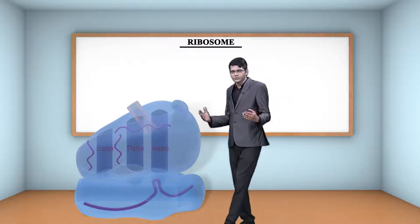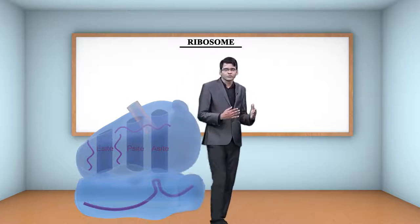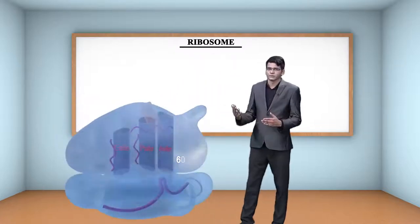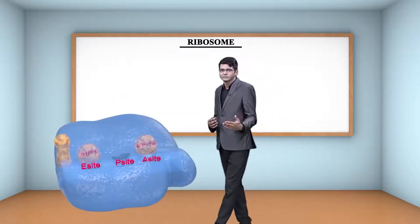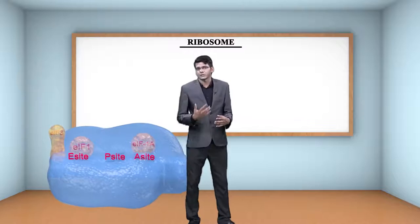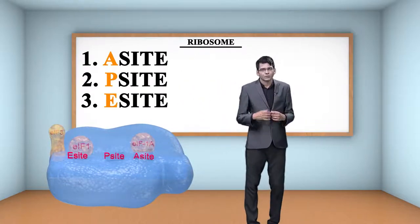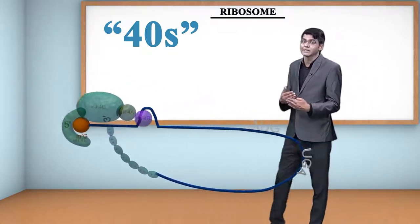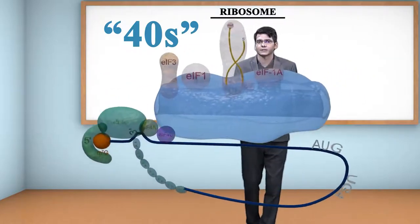Does the 80S ribosome have subunits? Yes. The 80S ribosome is made up of two subunits — one is known as 60S and the second is known as 40S. The 60S is the large subunit and has 3 tRNA binding sites known as A site, P site, and E site. The 40S is the small subunit, which has an mRNA channel through which mRNA enters.